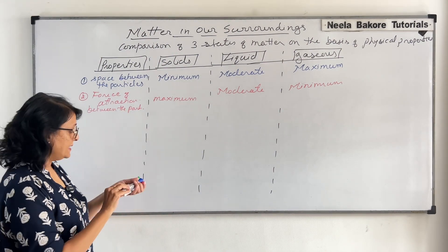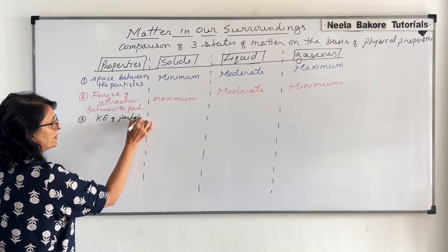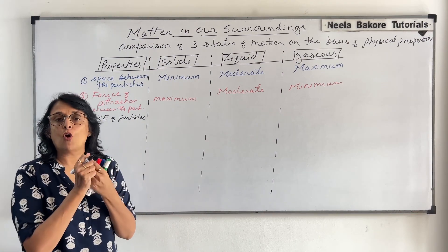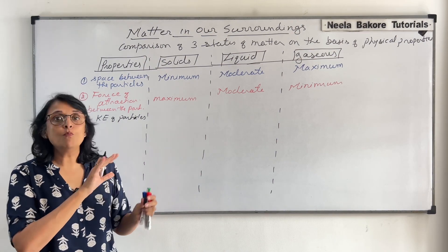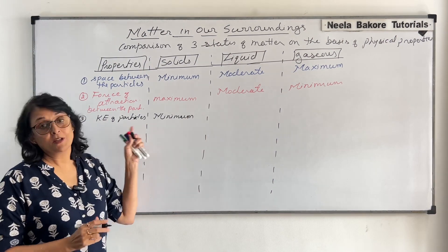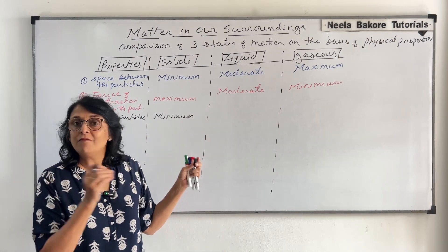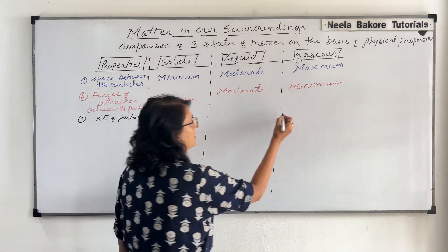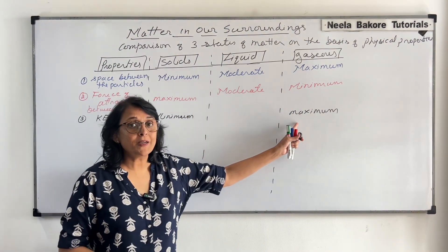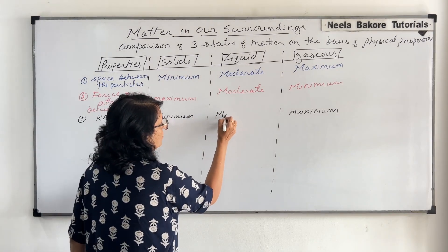The next property is kinetic energy of the particles. Kinetic energy is the energy possessed by moving particles. Solids have a very strong force of attraction, so the particles remain with each other and do not move away — meaning kinetic energy is minimum. In gases, the particles move away from each other because they do not have much force of attraction, so kinetic energy is maximum. In case of liquids, it is again moderate.